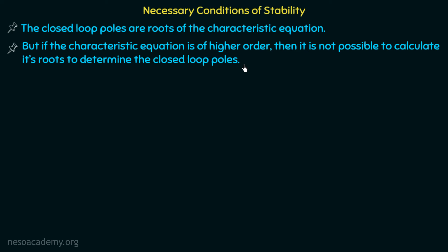If the characteristic equation is of second order — a quadratic or cubic equation — we can solve it to find the roots and comment on stability. But if the characteristic equation is of higher order, for example eighth order, it will have 8 different roots, i.e., 8 closed-loop poles, and it becomes very difficult to comment on the stability of that system.